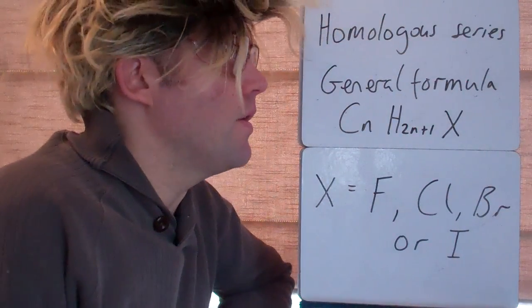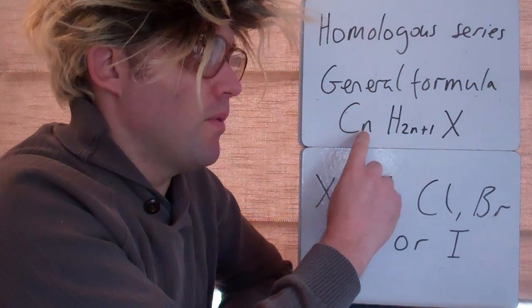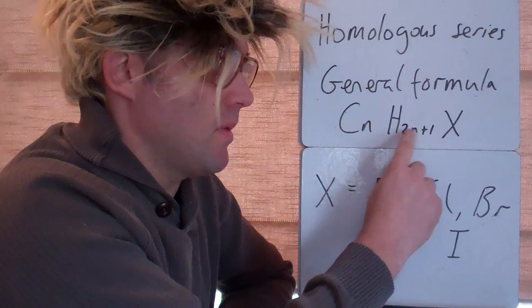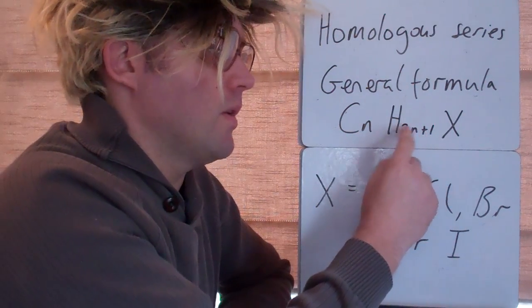Halogenoalkanes are their own homologous series. The general formula is for every carbon you have 2 hydrogens plus 1. So if you have 2 carbons, you have 2 times 2 plus 1, so 5 hydrogens.